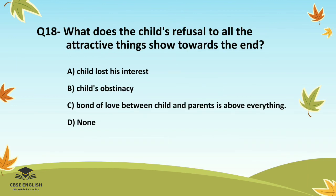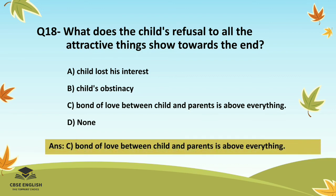Question number eighteen: What does the child's refusal to all the attractive things show towards the end? Options are: child's obstinacy; bond of love between child and parents is above everything; or none. The correct answer is bond of love between child and parents is above everything.